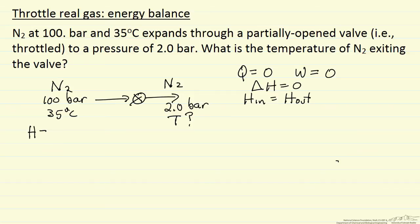This enthalpy depends on the reference state picked in the spreadsheet. So for that reference state, here's the enthalpy per mole of nitrogen entering, which means that's H in. H out must be the same number. And so what I've done is I adjusted the temperature in the spreadsheet at this pressure of 2 bar until I obtained the same enthalpy. Let me show you the spreadsheet to give you a better idea.